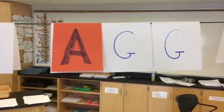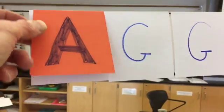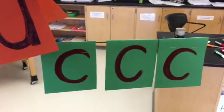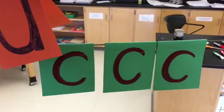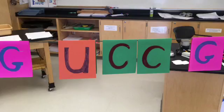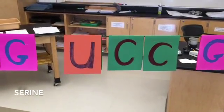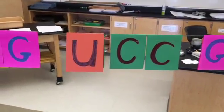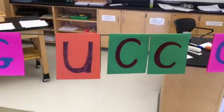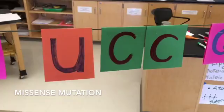Now let's take this case where the first letter of the codon was changed from a G to an A. That would affect the code on the messenger and turn it from a C to a U. So instead of the amino acid being proline, it would be serine. When a single letter change changes one amino acid, it is called a missense mutation.